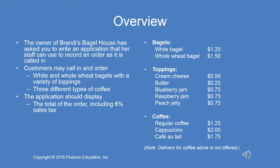You have two types of bagels — white and whole wheat — for them to choose from. There's a variety of five different toppings that can be placed on the bagels: cream cheese, butter, blueberry jam, raspberry jam, and peach jelly. And there are three types of coffee: regular, cappuccino, and cafe latte. The application will display the total of the order including 6% sales tax.